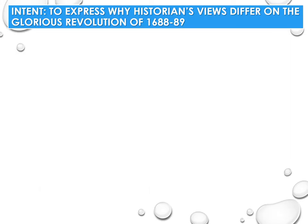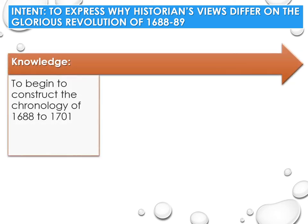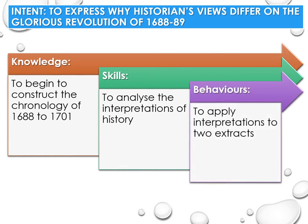The intention of this lecture is for you to be able to express why historians' views differ on the Glorious Revolution of 1688 and 1689. Knowledge-wise, you will begin to construct the chronology of 1688 to 1701. Skills-wise, analyse the interpretations of history, and behaviourally apply this knowledge of interpretations to two extracts in the associated material.